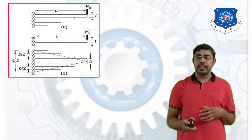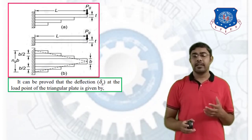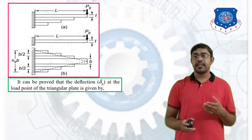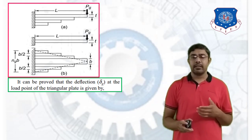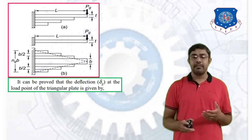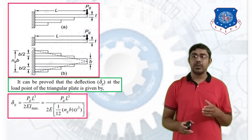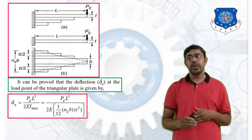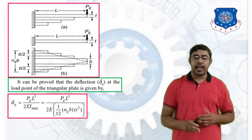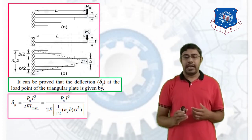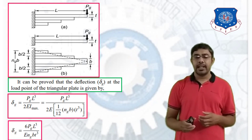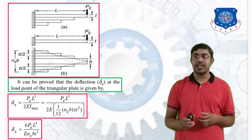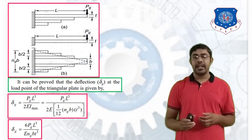Now consider the deflection. It is proven that the deflection delta_G at the load point of the triangular plate is given by delta_G = PG·L³ / (2·E·I_max), where I = (1/12)·NG·B·T³. Simplifying, delta_G = 6·PG·L³ / (E·NG·B·T³).